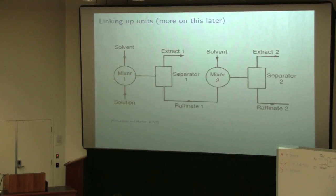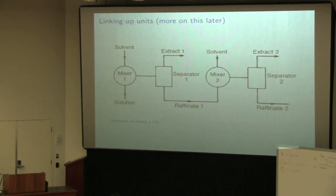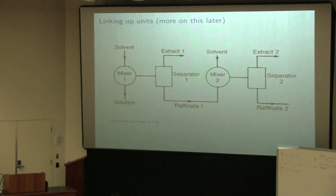Next class we'll link these units up. We'll first look at just one mixer and settler today, then take it to two and three, and then countercurrent flow. Together in series we've got a mixer followed by a settler, where the settler separates our extract — the richer phase — and our raffinate, which contains low solute concentration. But that solute concentration in the raffinate is still appreciable, so we contact it with fresh solvent and re-contact it with the raffinate. Leaving the second stage should be a raffinate almost free of solute. It just becomes a series cascade of mixers and settlers.